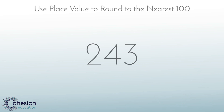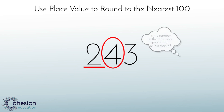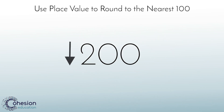When rounding using place value and you're given the number 243 and asked to round to the nearest hundred, students would underline the hundreds place and look to the right to circle the number in the tens place. Students would then think: is the number in the tens place greater than or less than 5? This is due to the fact that 5 falls directly in the middle of a group of ten. Since the number 4 is less than 5, the student would round down to 200 from 243.